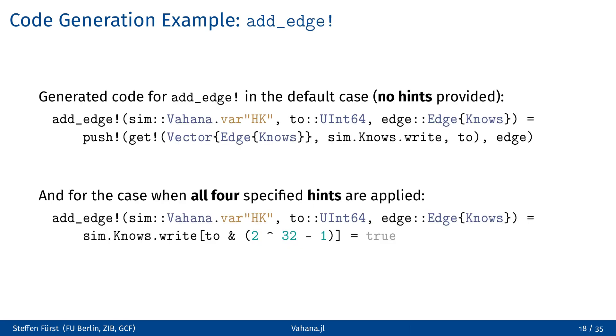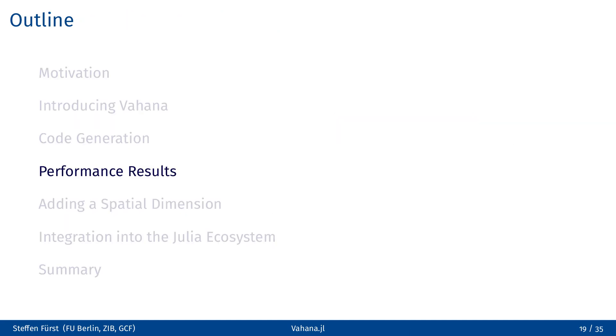Of course, all functions that are working on these data structures must be generated accordingly. You see here as an example the add edge function, the first version is the generated code for the default case without any hints, and the second one the version with all four hints. As you can see, in this case, the only overhead Vahana has compared to an implementation that works directly with a boolean vector is the AND operator to retrieve the vector index from the agent ids. Let's now move on to a practical example that helps us to evaluate the performance benefits of using hints.